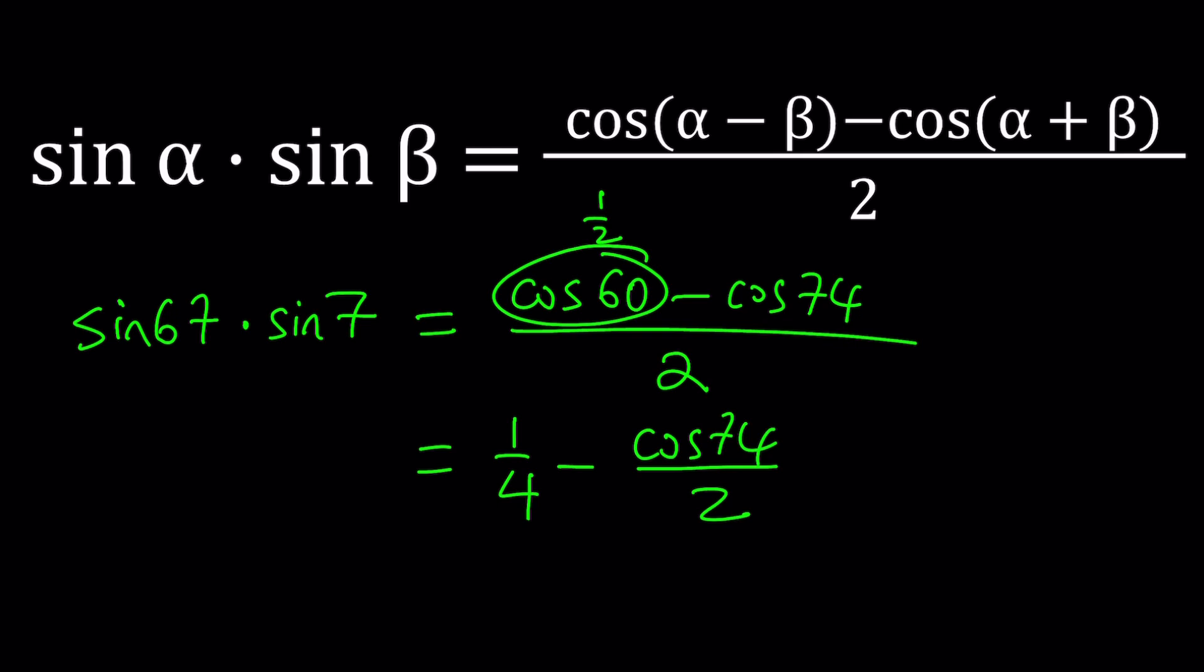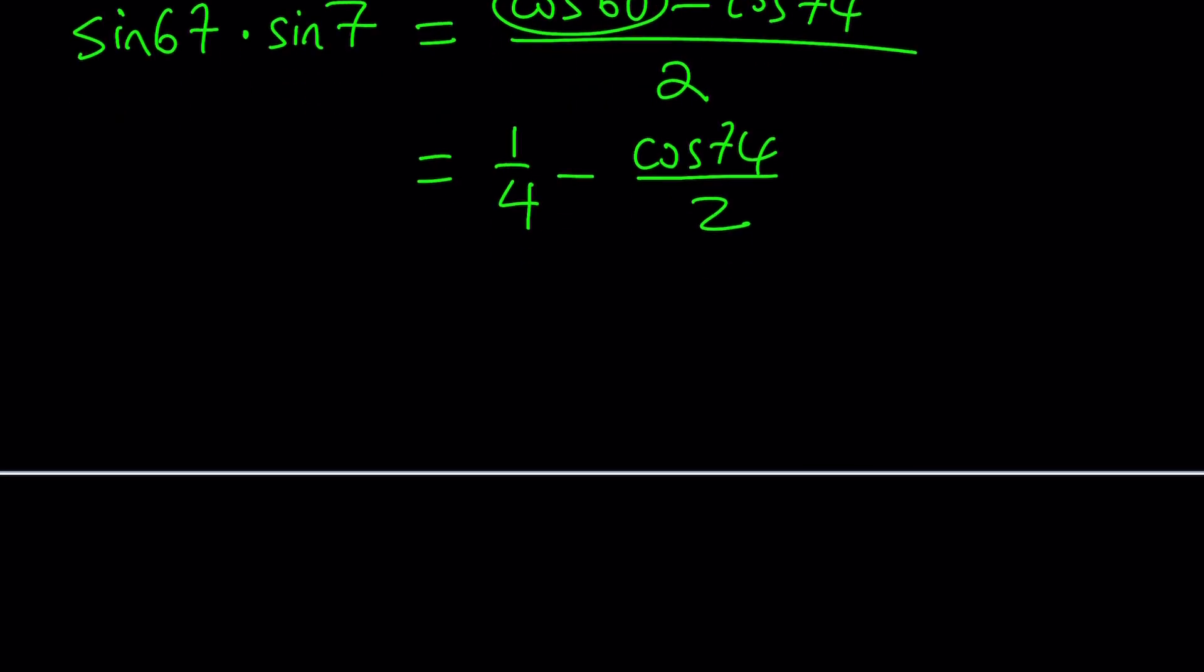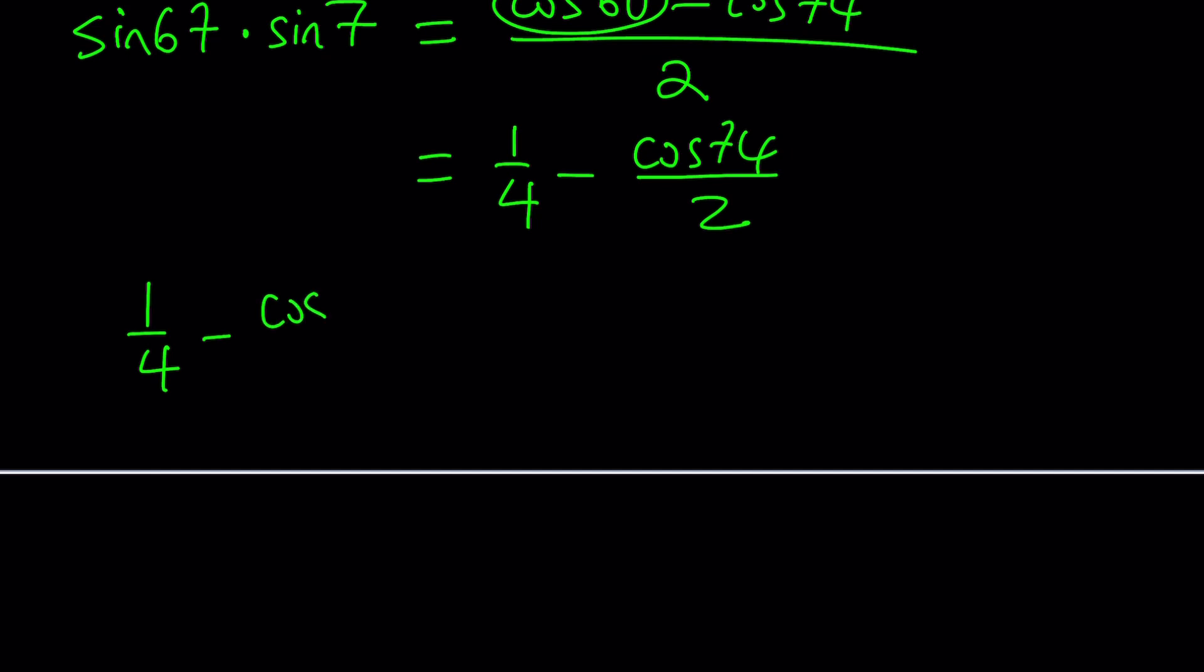So that's what I get from the product. Now, I need to subtract sine 37 squared. What am I going to do with sine 37? Nothing for now. We're just going to subtract sine squared 37.